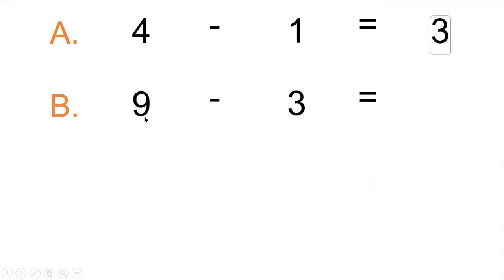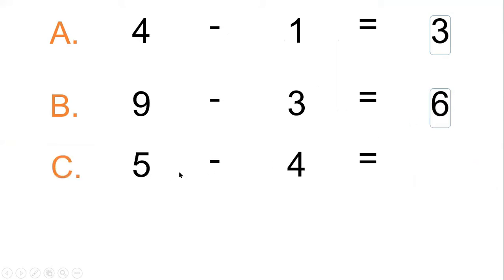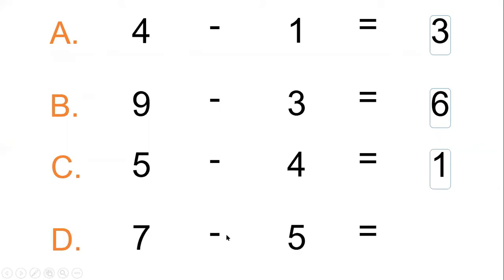Now let's read these number sentences: four minus one equals three; nine minus three equals six; five minus four equals one; seven minus five equals two. All of these we call subtraction sentences. The answer that we get after subtracting, we call the difference.